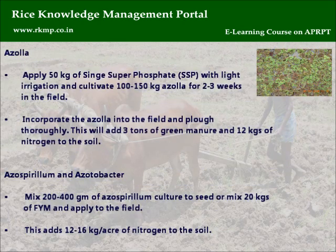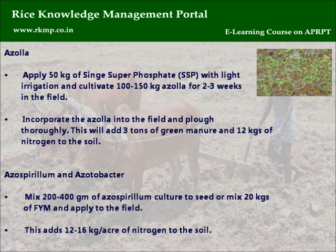Azolla: Apply 50 kg of single superphosphate (SSP) with light irrigation and cultivate 100 to 150 kg of azolla for 2 to 3 weeks in the field. Incorporate the azolla into the field and plough thoroughly. This will add 3 tons of green manure and 12 kg of nitrogen to the soil.